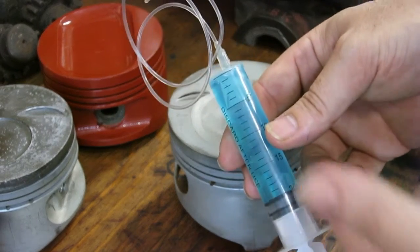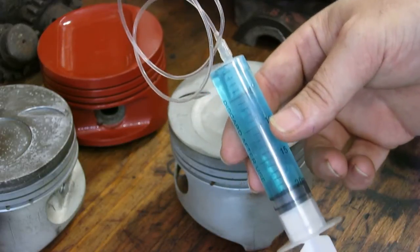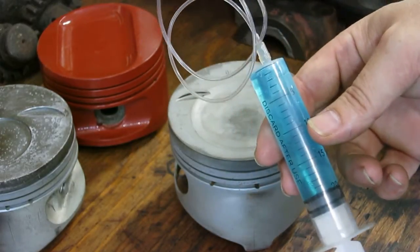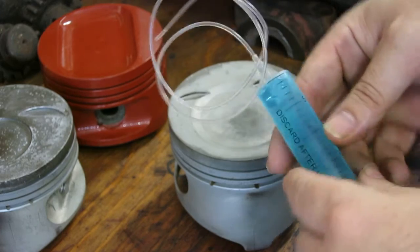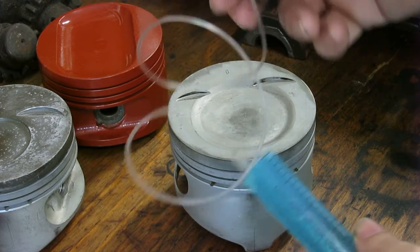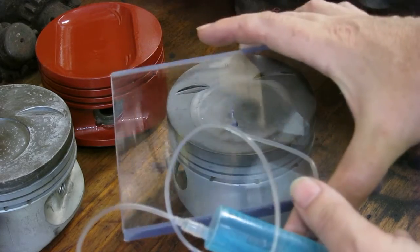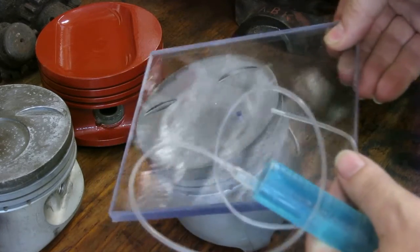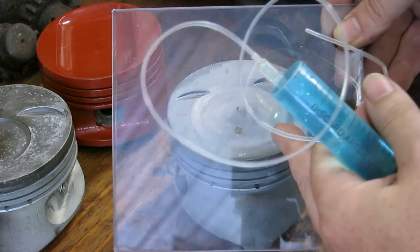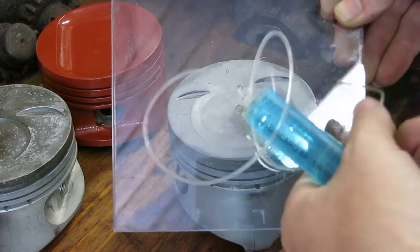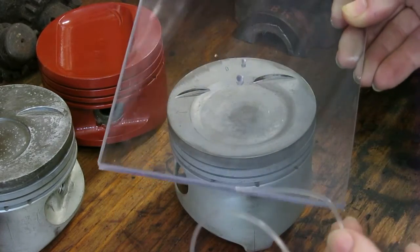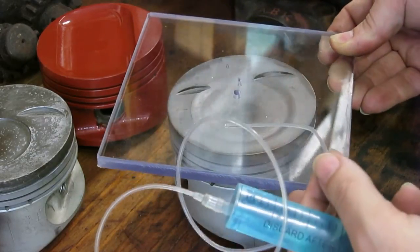I used windshield washer fluid because it's blue, I thought it would show up well in the video, but water or something like that is fine. This particular syringe has this little tube that comes off it, which is helpful, but I made my plate with two size holes—a little hole for the tube, but then the big hole I can just stick the end of a syringe in if I didn't have the tube.